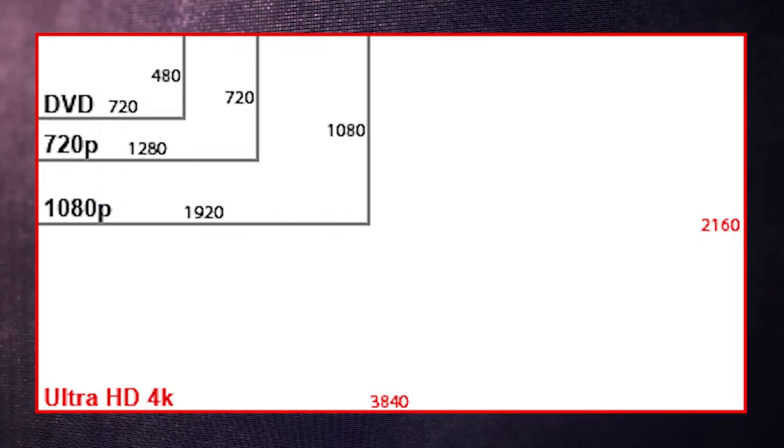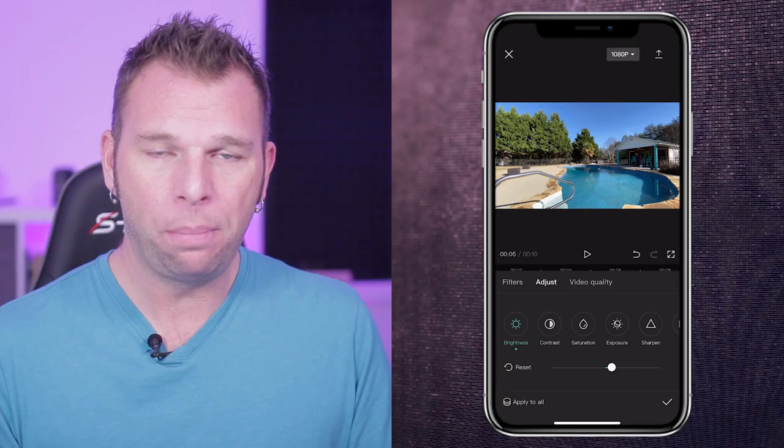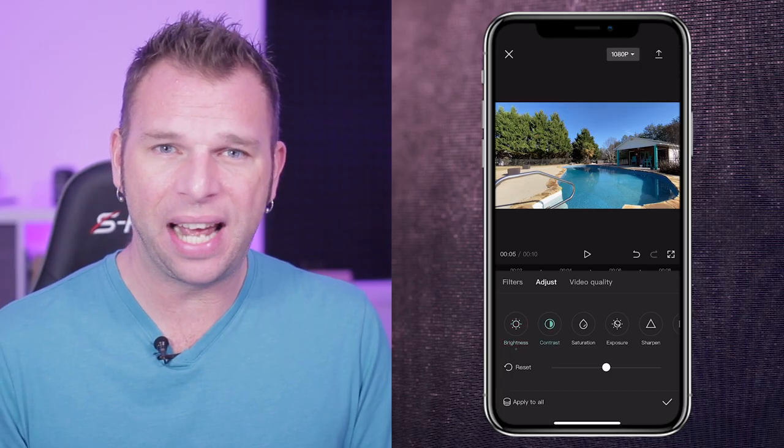That said, any time you upscale or up-res a piece of footage into a different resolution, you do run the risk of that upscaled version becoming pixelated or blurry. Because you're taking like a 1080, which is like this size, and making it this size to a 4K signal — that's going to definitely increase the pixelation or blurriness of that video. But right here inside CapCut,